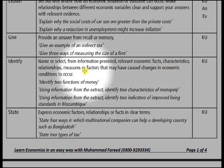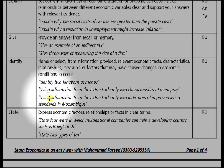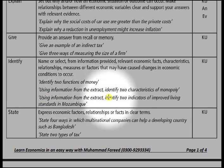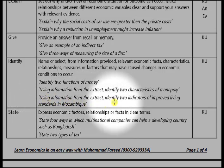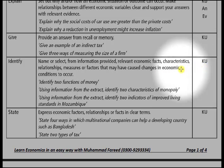The next command word is identify. Whenever you see this command word, it means you need to name or select from information provided relevant economic facts, characteristics, relationships, or factors that may have caused changes in economic conditions to occur. Examples: identify two functions of money — for instance, money is a measure of value, money is a medium of exchange; using information from the extract, identify two characteristics of monopoly; using information from the extract, identify two indicators of improved living standards in Mozambique. This command word checks your skill of knowledge and understanding.